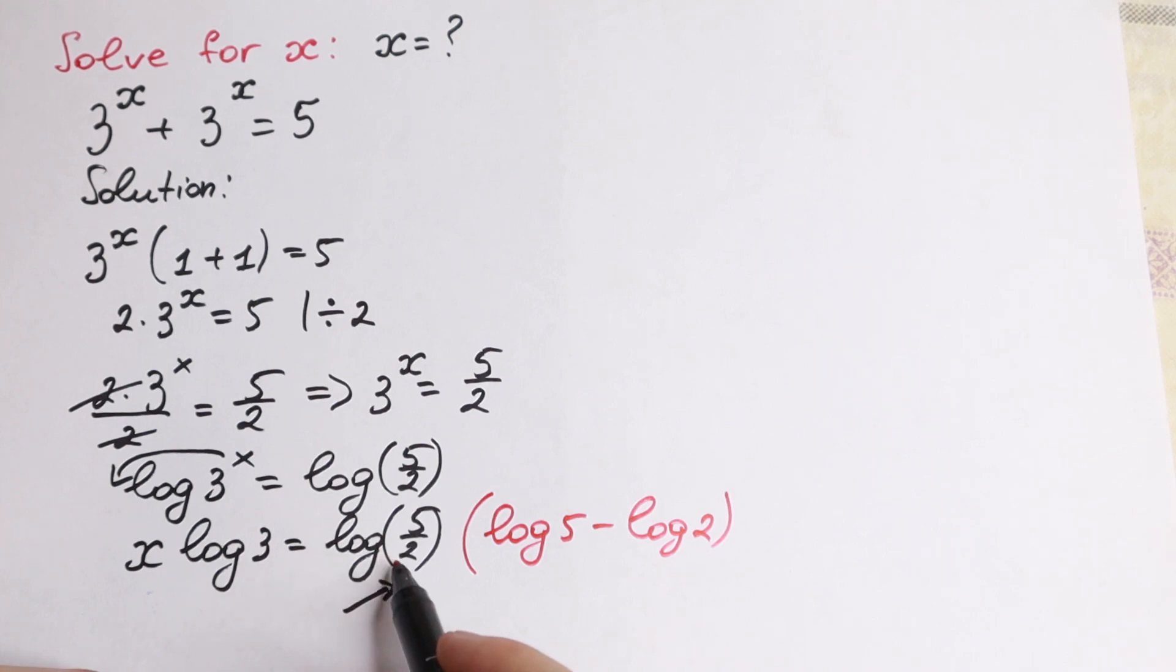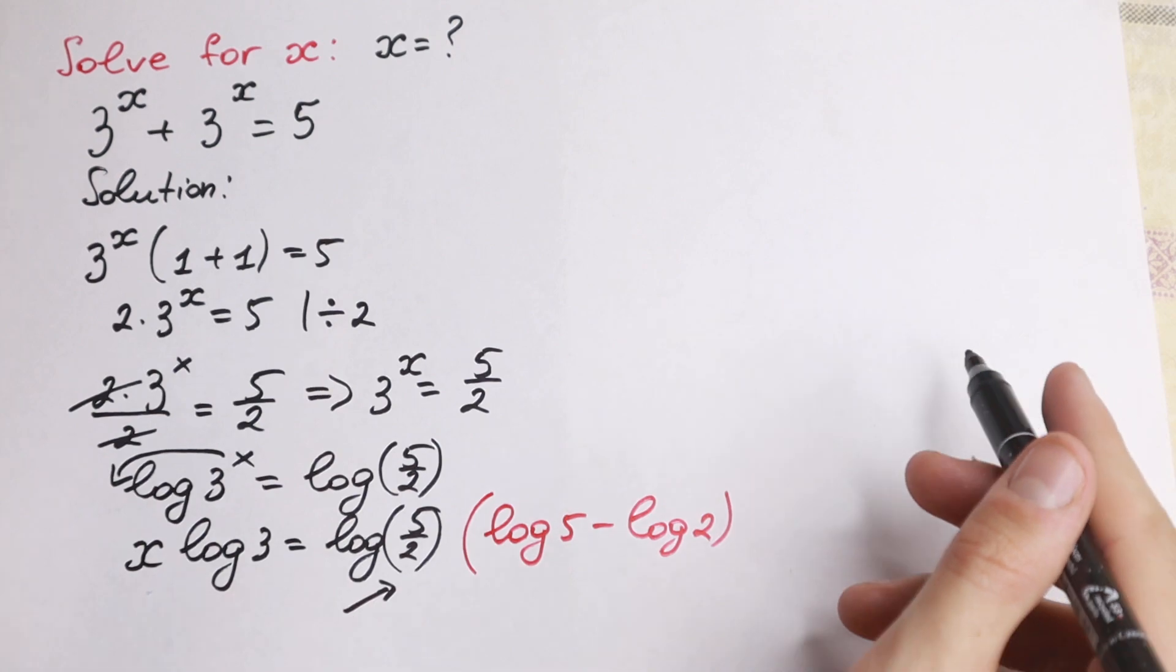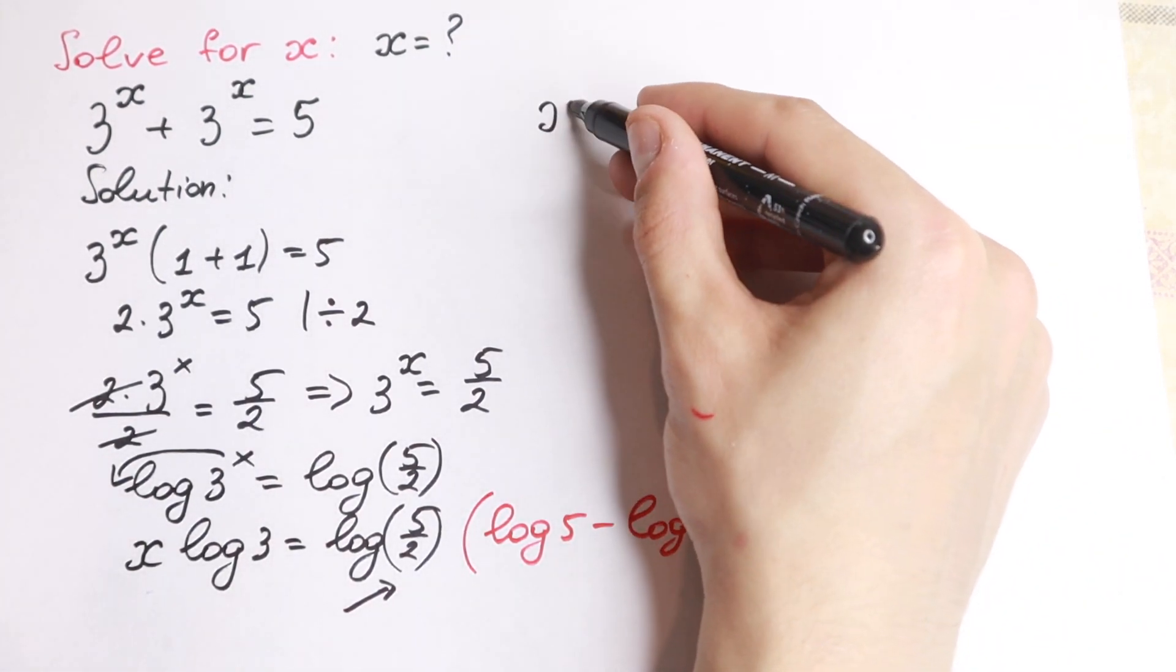For example, if right here we have multiplication, we can add it. But right here I write as a subtraction because we have a fraction. So how our equation looks like.